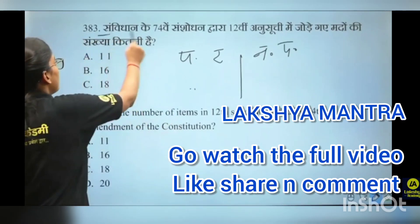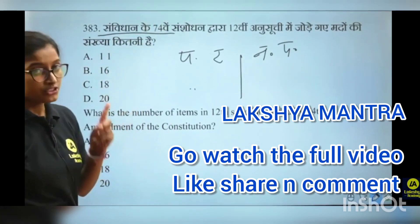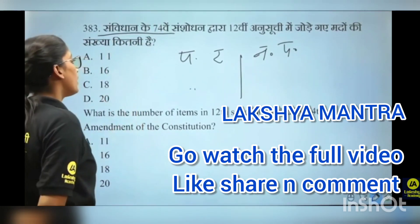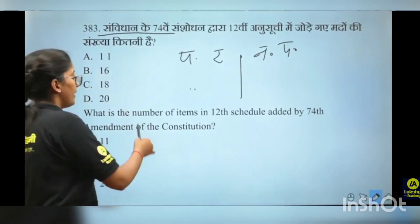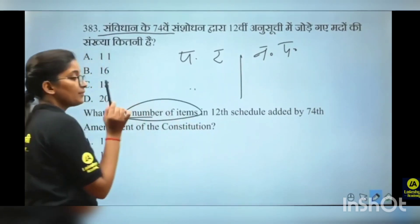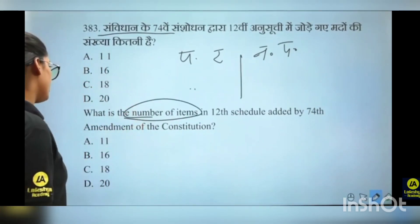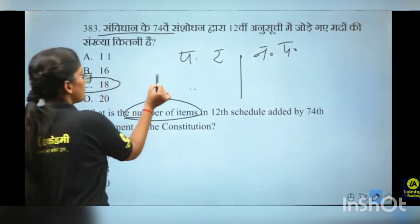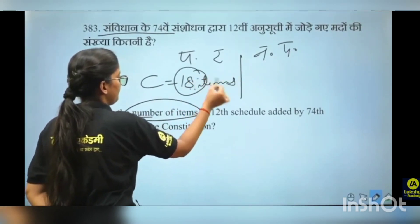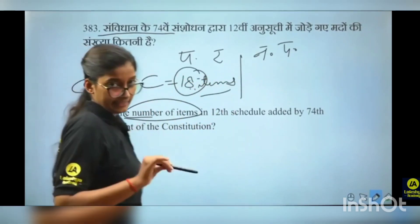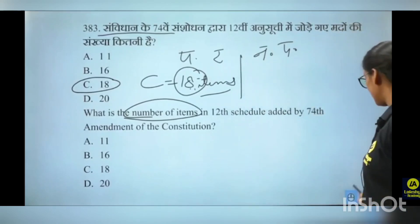The other option is elimination. This is the 75th Sanshodan Warra. How many items have been added? A number of items have been added by the 74th Amendment of the Constitution. Option C is correct — 18 items added.